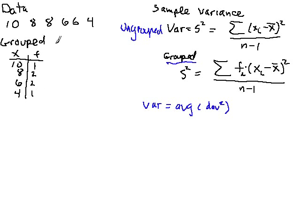Now the mean is pretty easy to calculate in this case. 4 and 6 is 10, plus 6 is 16, another 16 is 32, gives 42, so it would be 42 divided by 6, giving me 7.